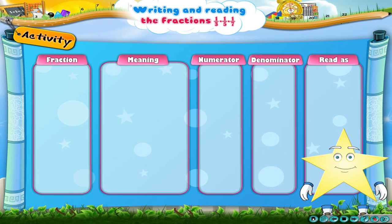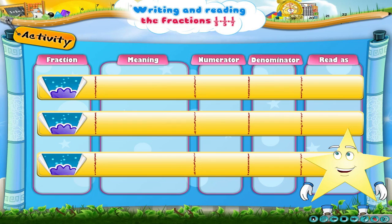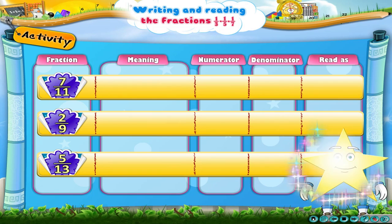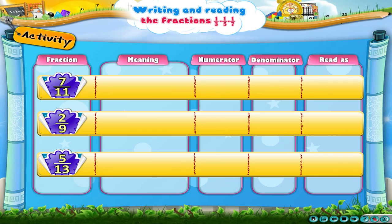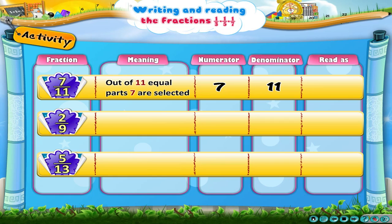Hey, Starry. Look at these fractions. Out of 11 equal parts, seven are selected. So the numerator is seven and the denominator is eleven. We read the fraction as seven upon eleven.